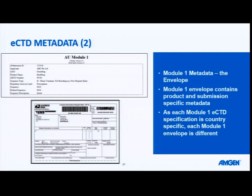Different regions will require different combinations of information. Some will require a contact email address so that they know who to contact about the submission. I like to think of it as the label you would put on a box that you're sending overseas — it's just got extra information about what's in that parcel and who's sending the parcel. Most of this is region specific, and this is where the agency will put a lot of work in to determine what information they require on their envelope, and the naming and standardization of application types so that it allows them to do a lot of grouping and administrative activities using this information.